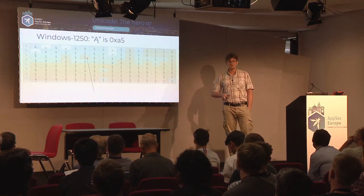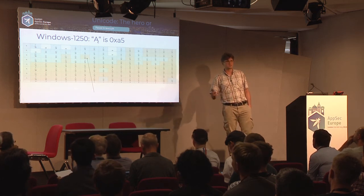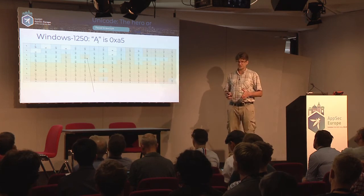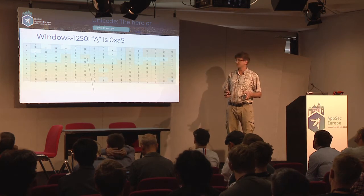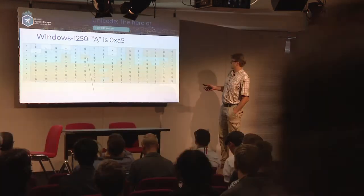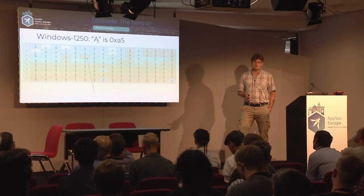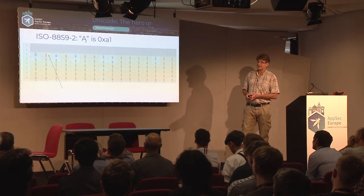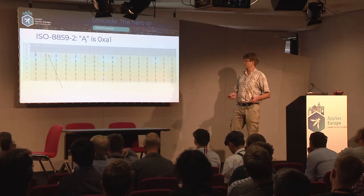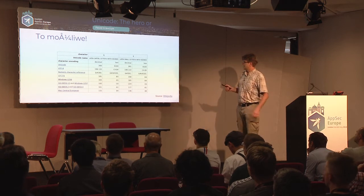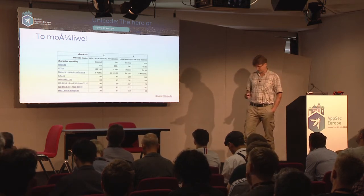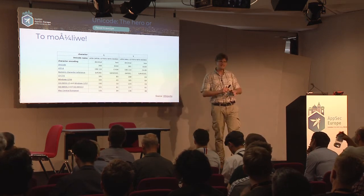Then, various application and operating system vendors started to solve this problem by using part of the ASCII character set and replacing the less common characters — for example, all the punctuation characters — with native characters. So in Windows-1250, the letter Ó is at position A5. What really matters is that in another standard, most common on Unix systems, the same letter was at position A1. This was the same story with all different characters, and this is where the concept of the code page came from — and it led to an enormous mess.